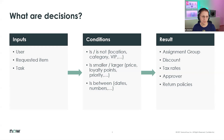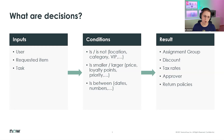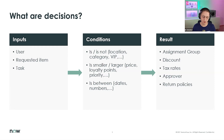Based on inputs — like data about a user, a request, a requested item, or a task — we can determine conditions. For example: is a user a VIP? Are they associated with a specific location? Is something larger or smaller? This can refer to a price, loyalty points, priority, dates, or numbers. When you've walked through your decision tree or table, you arrive at a result — like an assignment group, discount percentage, tax rate, approver, or return policy.